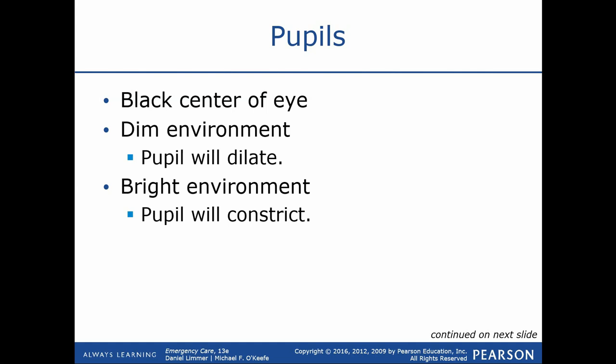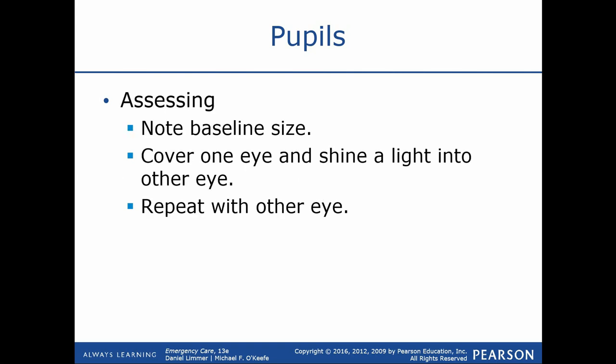We know that pupils should constrict together — shine a light into the right eye and both the right and left eye should constrict; same on the opposite side. We use the term PEARL: Pupils are Equal And Reactive to Light. Same size and reacting together are indications of intact neurologic function. The top image shows constricted pupils — normal in a bright environment. The middle shows dilated pupils — normal in a dim environment. The bottom shows unequal pupils — a huge indicator of underlying head trauma or intracranial pressure building up.